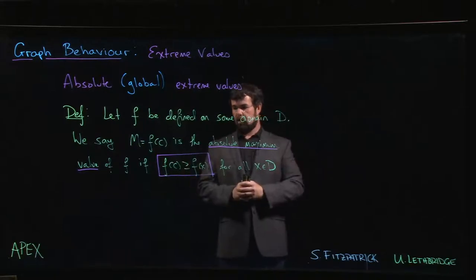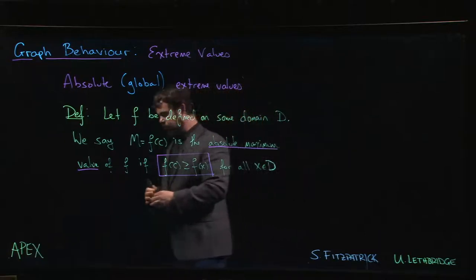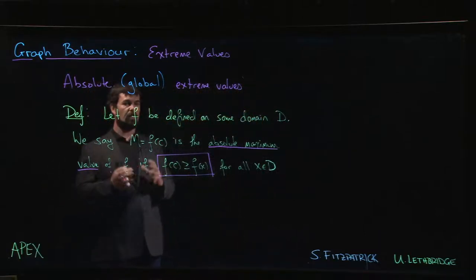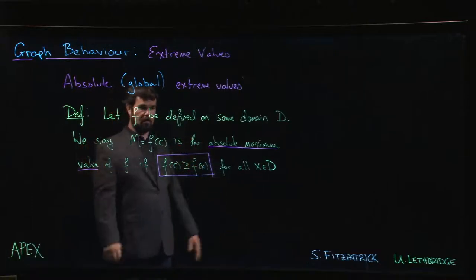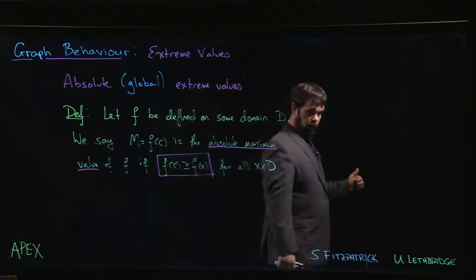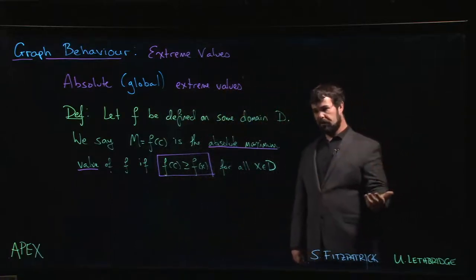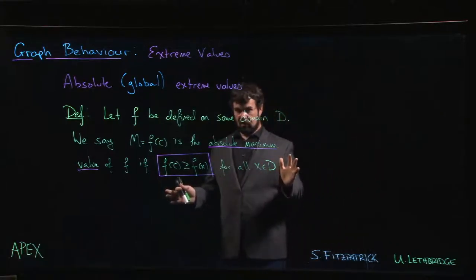We're finished with the chapter on derivatives, and at this point we know how to take the derivative of pretty much any function that somebody might throw at us. As far as the mechanics of computing derivatives, we're pretty much on top of that. We've got our product rule, our quotient rule, our chain rule. We know how to deal with implicitly defined functions, inverse functions. We're pretty much derivative machines at this point.